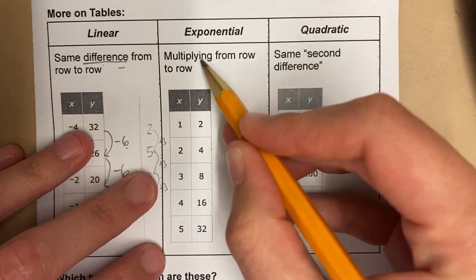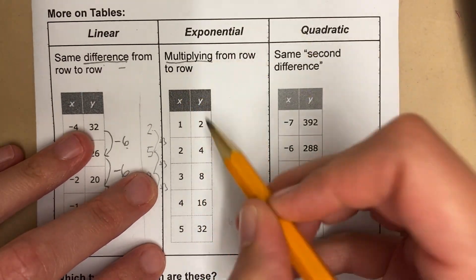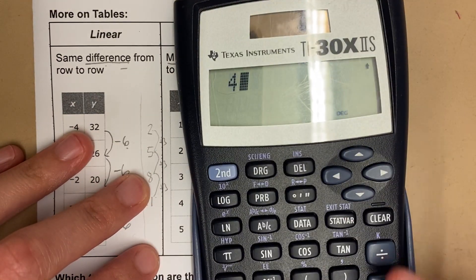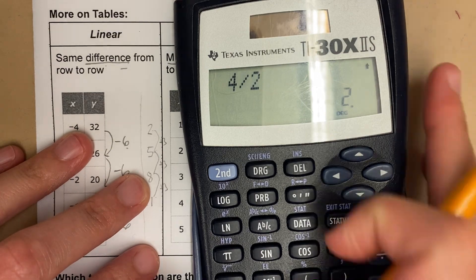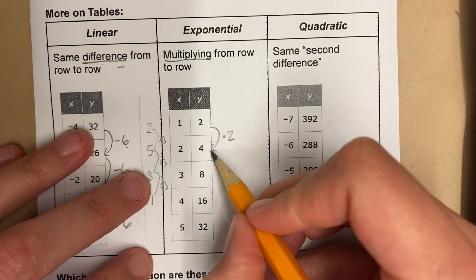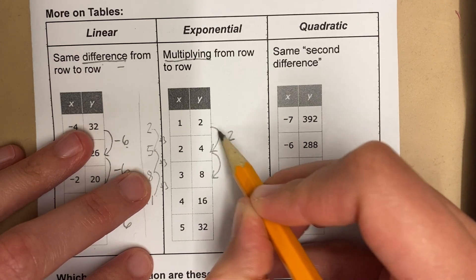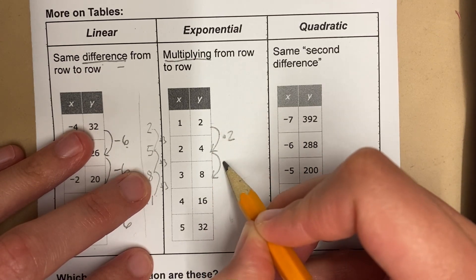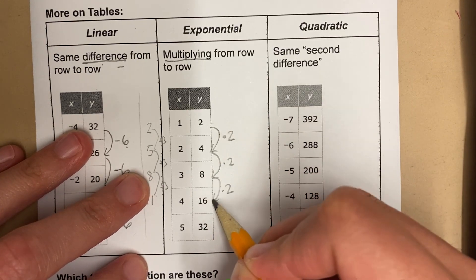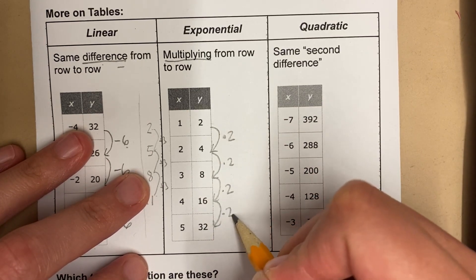In an exponential function, we're multiplying from row to row. 2 times what is 4? 4 divided by 2. I want to just model for you that you can use the calculator even when the numbers get crazy. This was times 2. Is this times 2? 4 times 2, 8. Yes it is. Is 8 times 2, 16? Sure is. Is 16 times 2, 32? Yep.